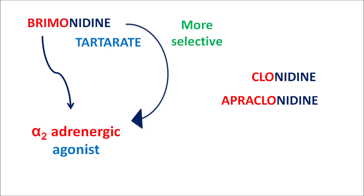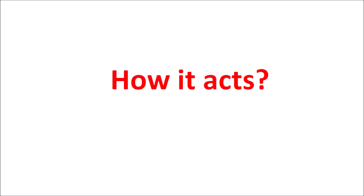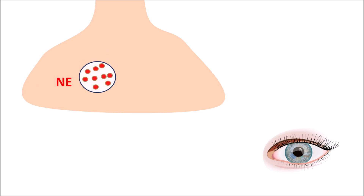Today we'll see how this drug acts, what the important precautions, side effects, and doses are. Now let us see how this drug acts within the eye — the sympathetic system plays an important role. Adrenergic neurons store an important neurotransmitter: norepinephrine.